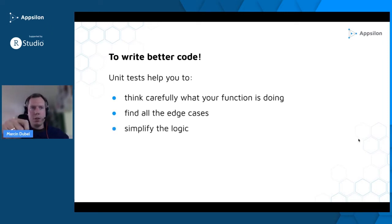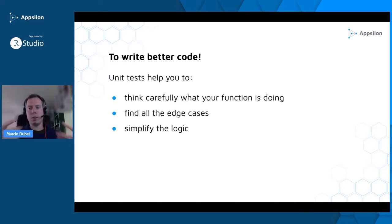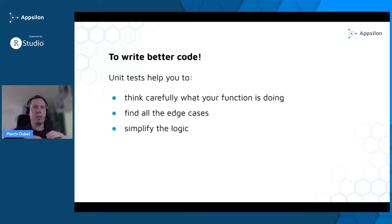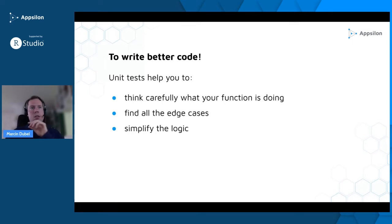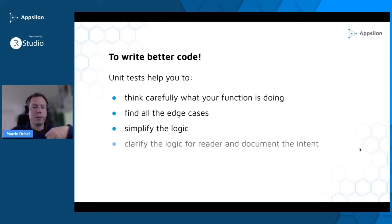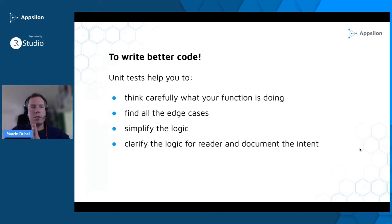Tests help you simplify the logic — having massive long functions is bad practice. Once you start writing tests for a function, it becomes clear you need to split it into smaller ones that you can test one by one. Tests also help clarify the logic for the reader and document the intent of the function. You can treat your unit tests as a way of documenting your code — going through the tests shows you what input is expected, what the output should be, and that it was intentional.